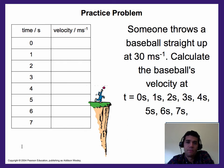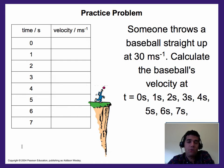Here's a practice problem: someone throws a baseball straight up at 30 meters per second. Calculate the baseball's velocity at 0, 1, 2, 3, 4, 5, 6, and 7 seconds. See if you can do this on your own — go ahead and pause it now.